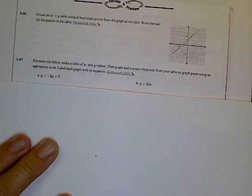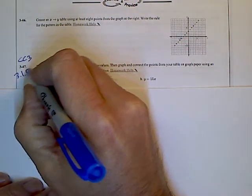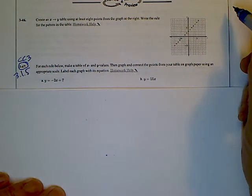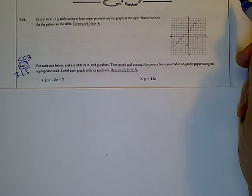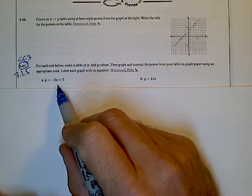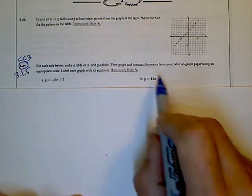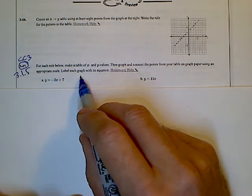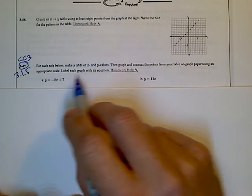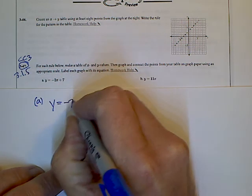Alright, we are looking at CC3, section 3.1.5, number 3-47. Specifically, we're taking some time to look at, given a rule, make a table of x and y values, and then graph and connect the points from your table on graph paper using appropriate scale. And then label each graph with its equation. So let's start with A, and I'm going to rewrite the rule so we see it clearly.